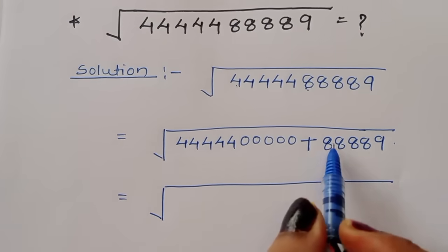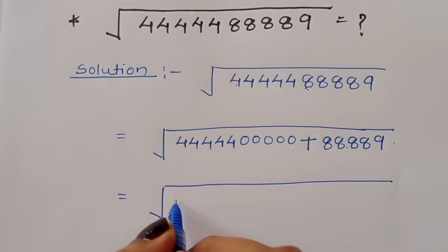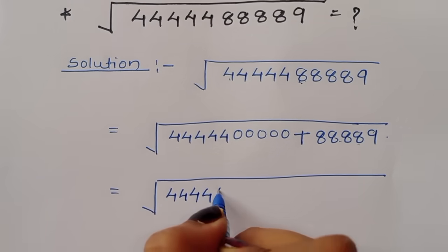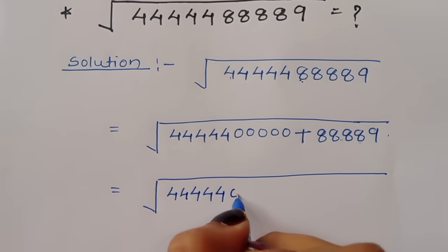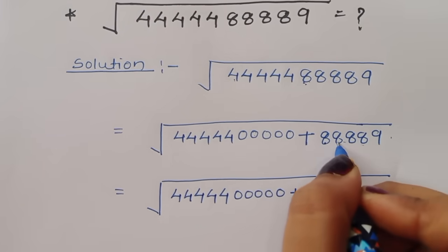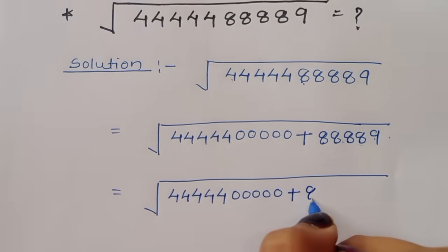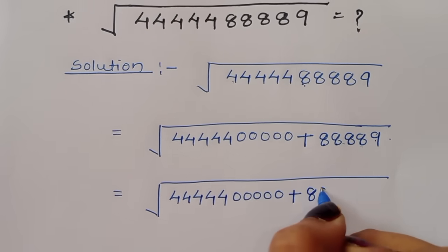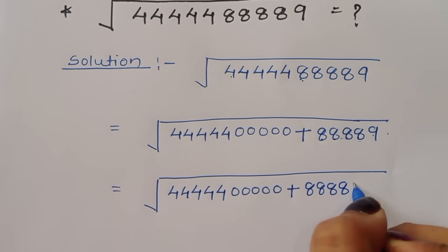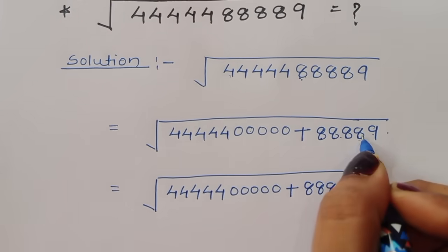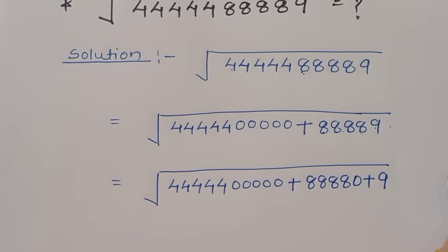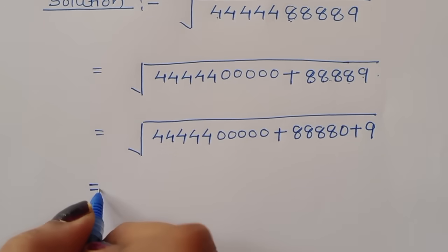Now we can again split this term. We get 12345 plus 12345, and so one term will become zero because we are splitting this term, plus 9. Is equal to.